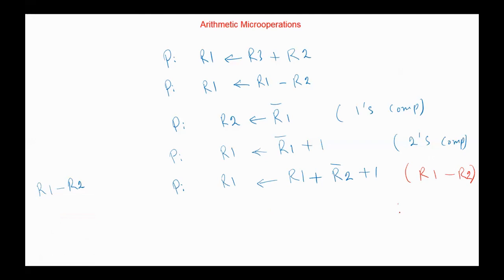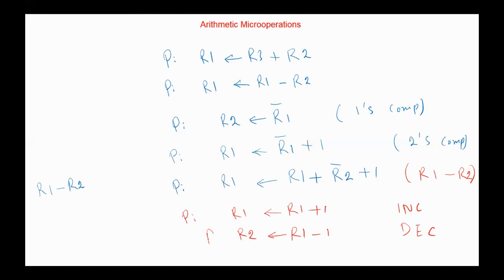For the increment operation, we increment R1 and can store the result in R1 as well. We can also decrement the contents of register R1 and store it in either R1 or, for example, R2 under the control function B. This is the symbol designation of some arithmetic micro operations.